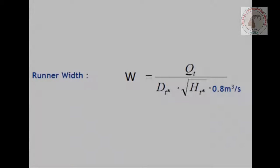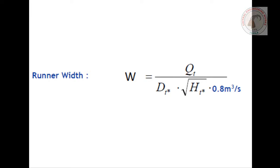Measuring width of runner. Runner width can be obtained by this formula, where width is represented by W, Qt is the discharge of water and its value must be put in meter cube per second, Dt is the diameter of runner, Ht is the water head. The value of all units must be in system international.